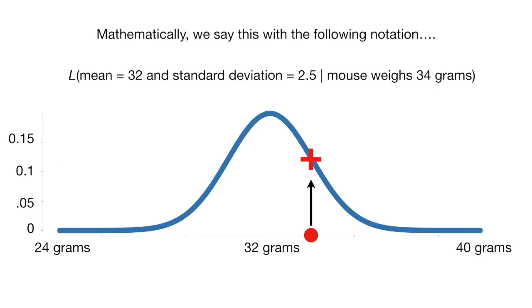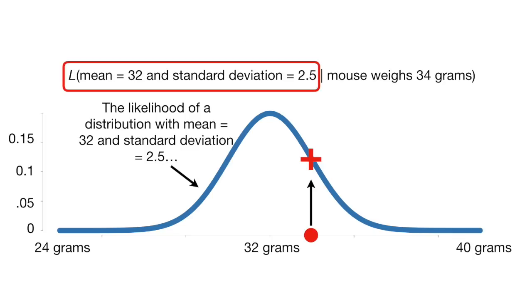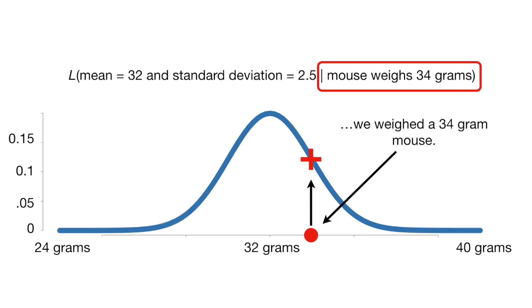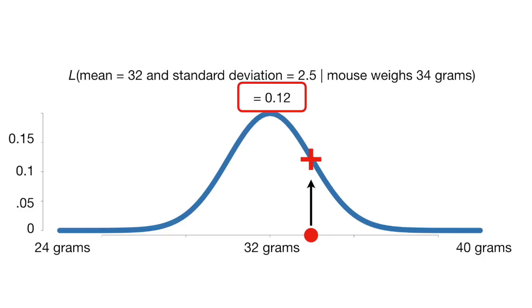Mathematically, we say this with the following notation: the likelihood of a distribution with mean equals 32 and the standard deviation equals 2.5, given we weighed a 34 gram mouse, and all that equals 0.12.